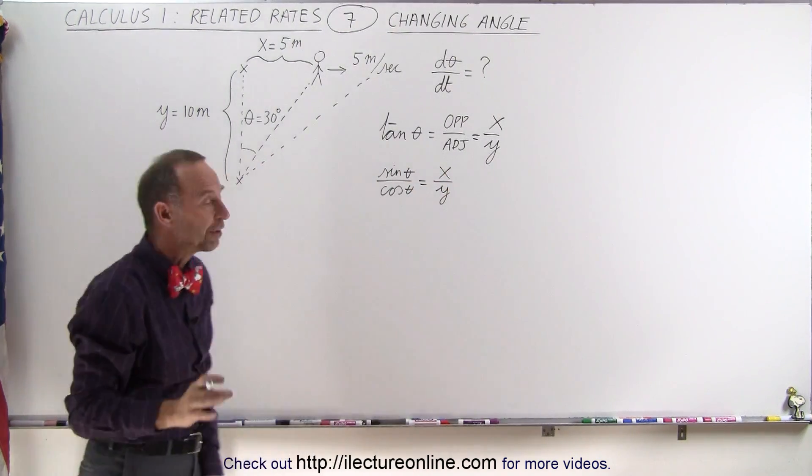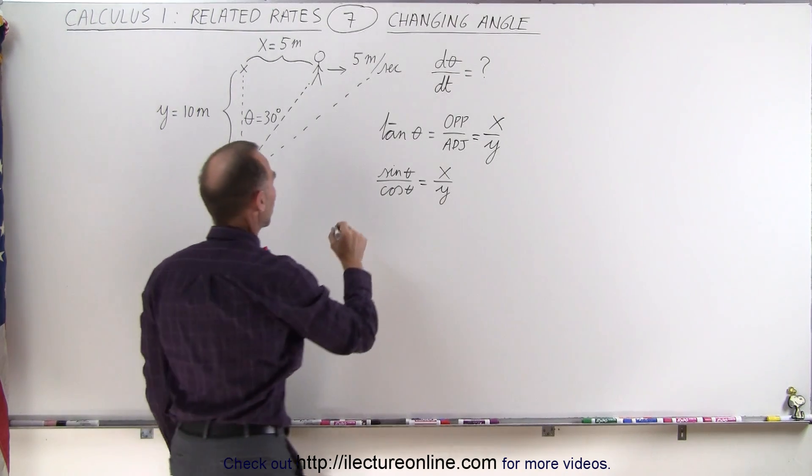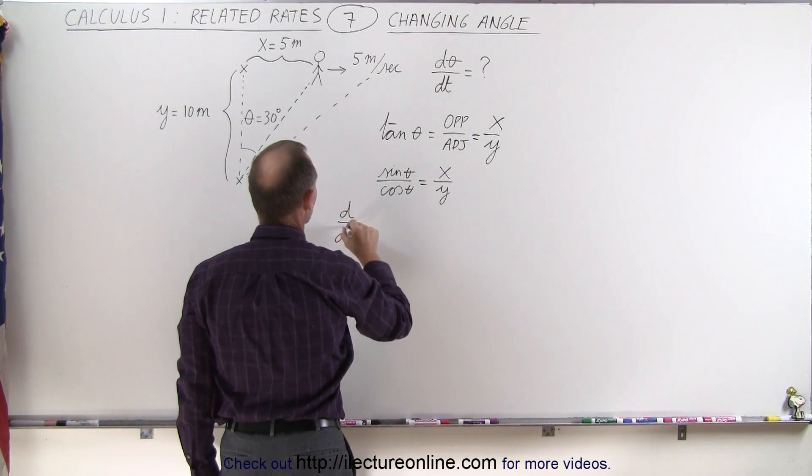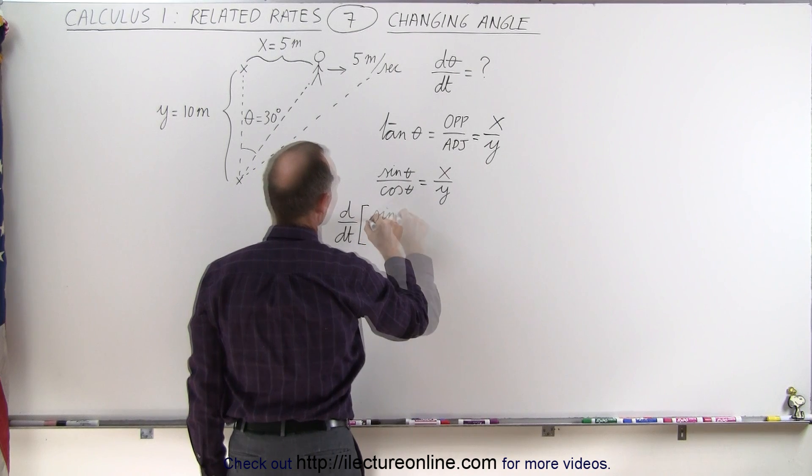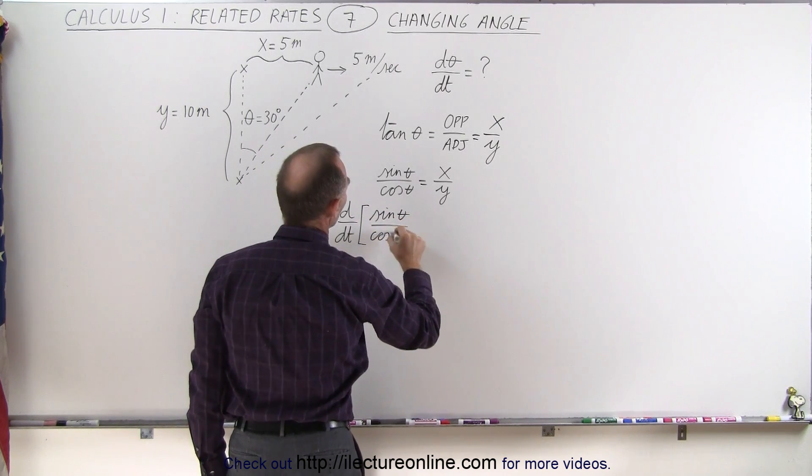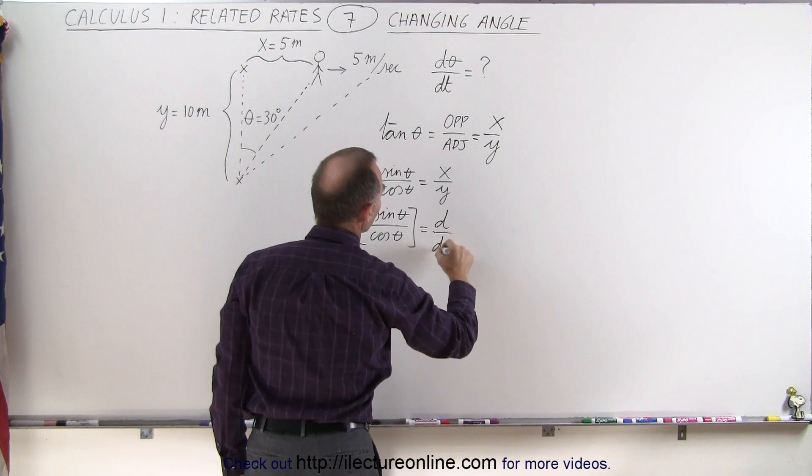And now we can take the derivative of both sides of the equation. We can take the d dt of the left side and set it equal to the d dt of the right side.